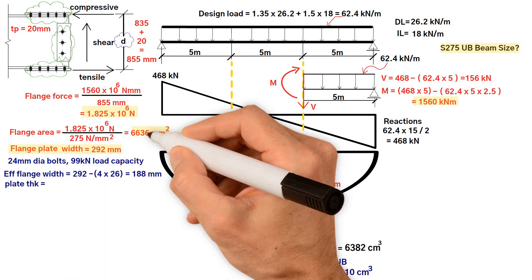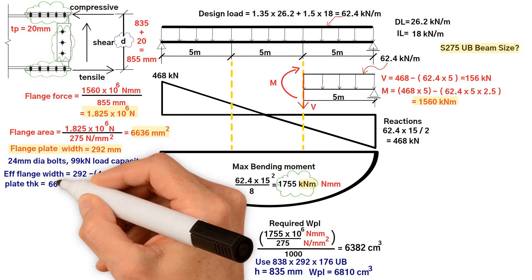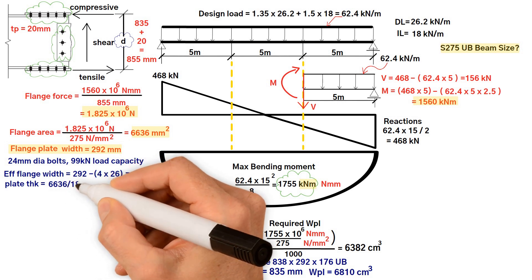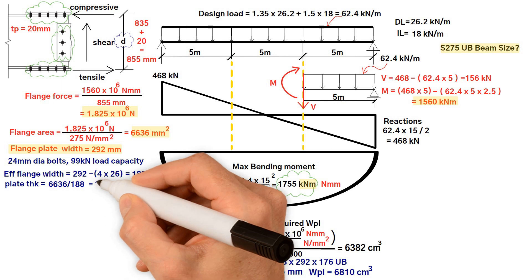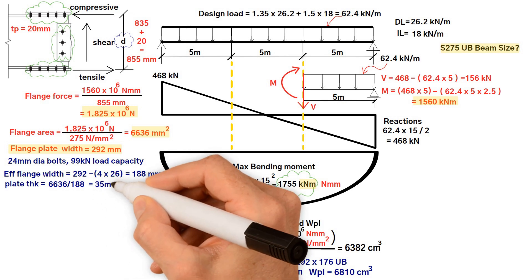Therefore, plate thickness equals flange area 6,636 divided by effective flange width 188 millimeters equals 35 millimeters.